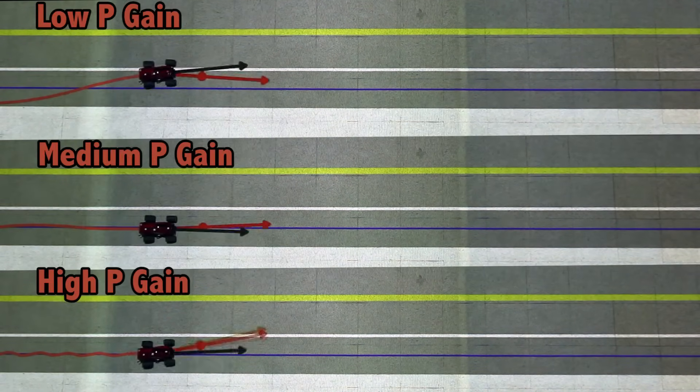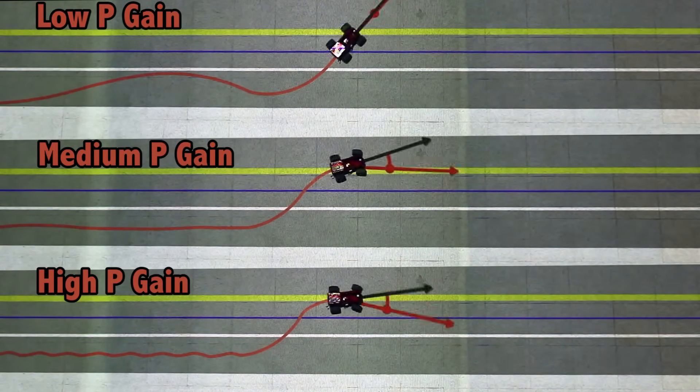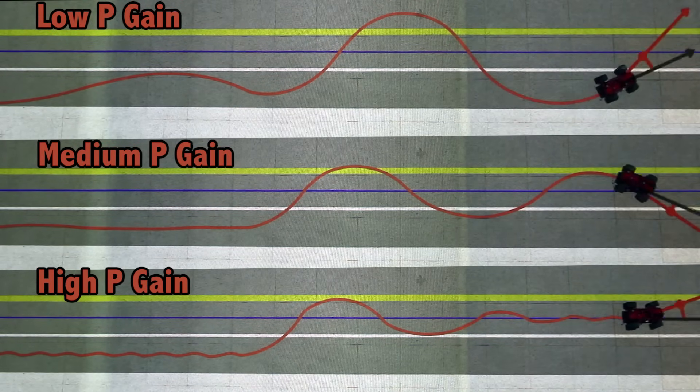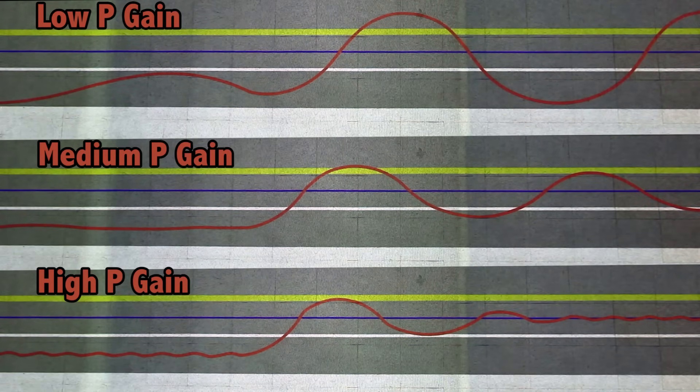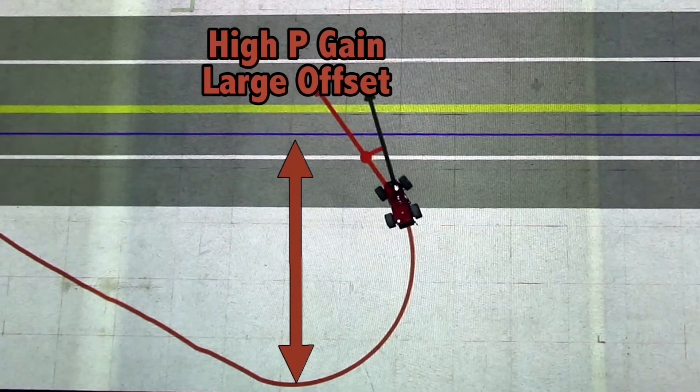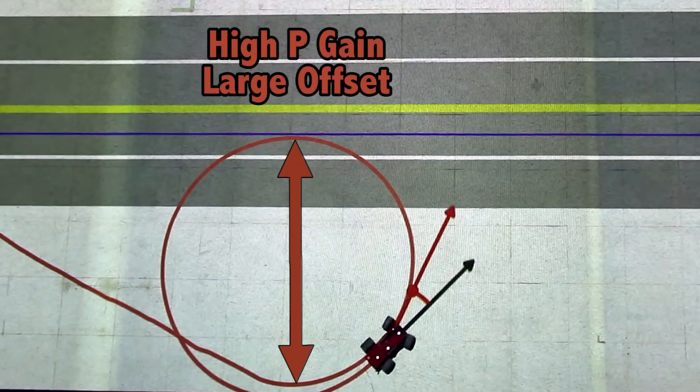The range of values the proportional gain can take drastically alters the performance of the vehicle. As you can see from this overlay, the performance gets better as the gain increases, but at a cost. If you start too far away from the desired trajectory with a high gain, the system can spin out of control.